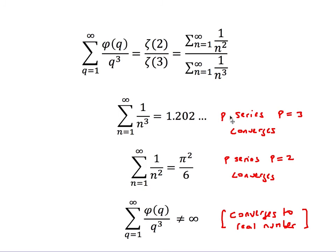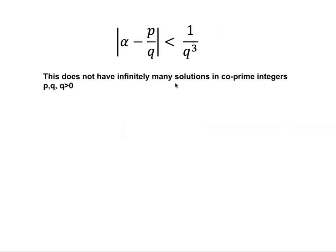ζ(2) is the sum of 1/n², which converges to π²/6, and ζ(3) is the sum of 1/n³, which also converges (approximately 1.202). Both are convergent p-series, so convergent divided by convergent gives a finite value — not infinity. Therefore the sum converges, meaning |α − p/q| < 1/q³ does not have infinitely many solutions in co-prime integers. This error bound was overly ambitious: you might find the occasional solution, but they'll be very rare in general.